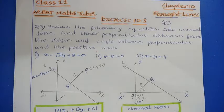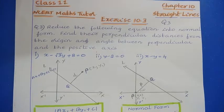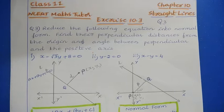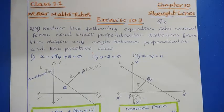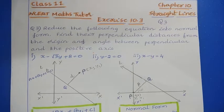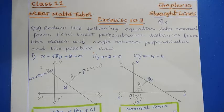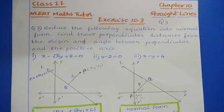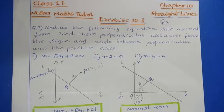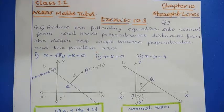Hi, welcome to the channel NCR team and tutor. If you like this video please like and subscribe. Exercise 10.3, chapter 10, straight line, question number 3 solution. Reduce the following equation into normal form. Find their perpendicular distances from the origin and angle between the perpendicular and the positive x-axis. They have given 3 sub-questions.